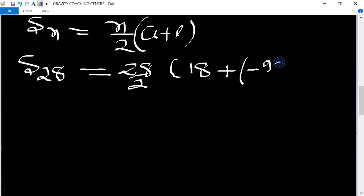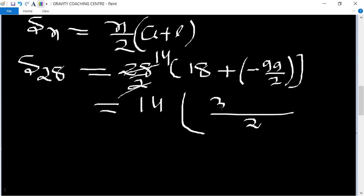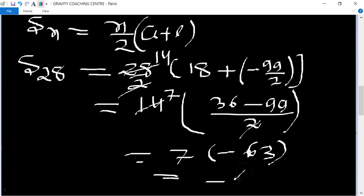28 cancelled by 2 gives 14. 14 times (36 minus 99)/2. So 14 times 7 times (minus 63/7), which equals 14 times (minus 63), equals minus 441, which is the correct answer.